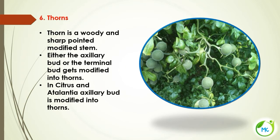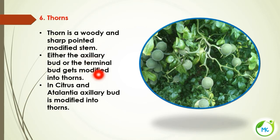The next aerial stem modification is thorn. Thorns are woody, sharp-pointed modified stems. Either the axillary bud or the terminal bud can get modified into a thorn. In Citrus and Atalantia, the axillary bud is modified into thorns.